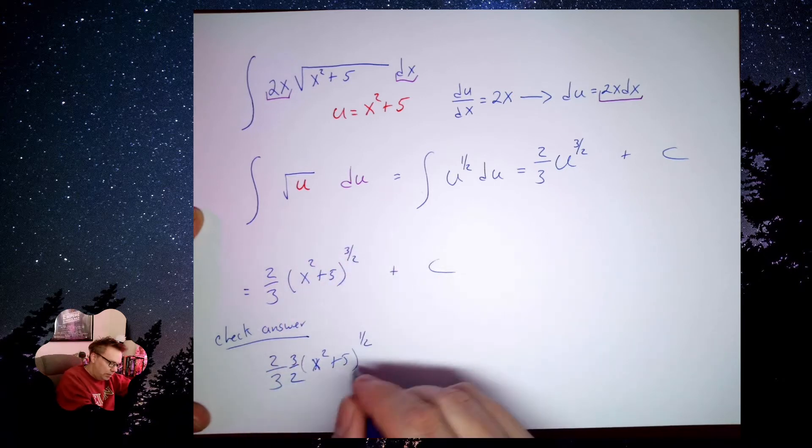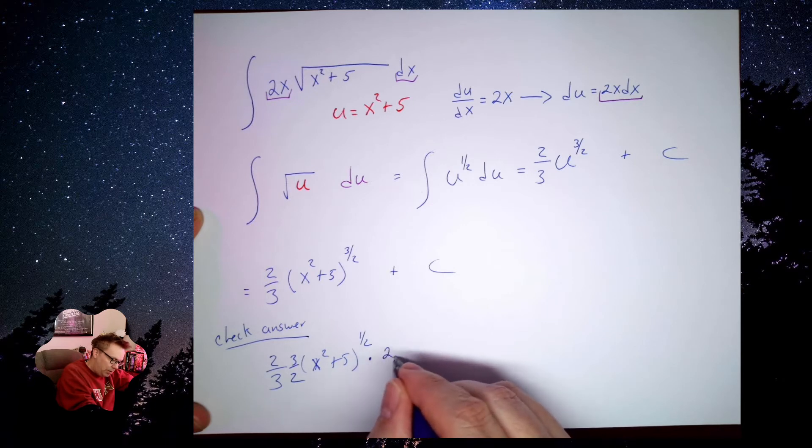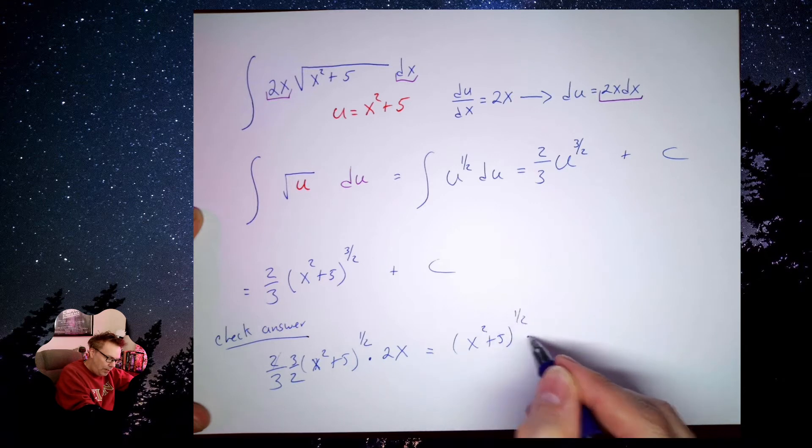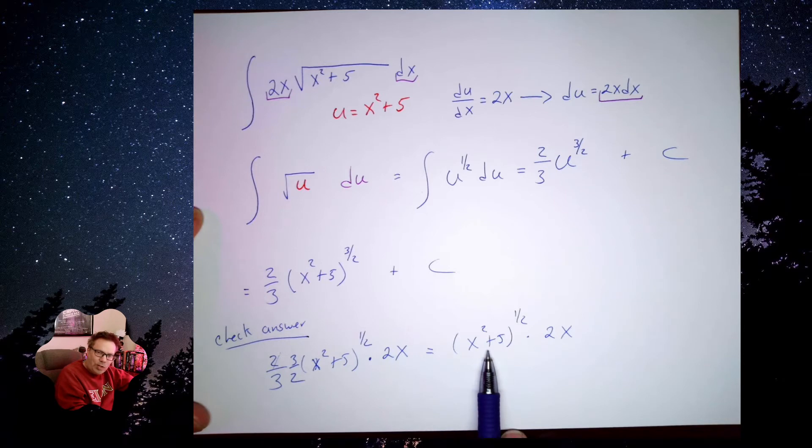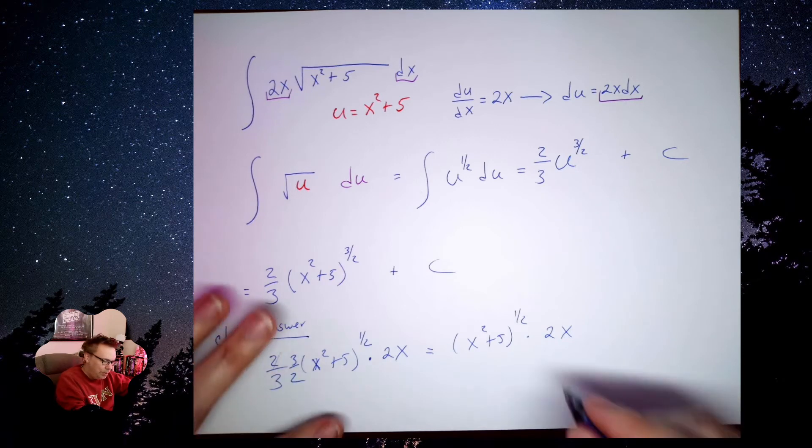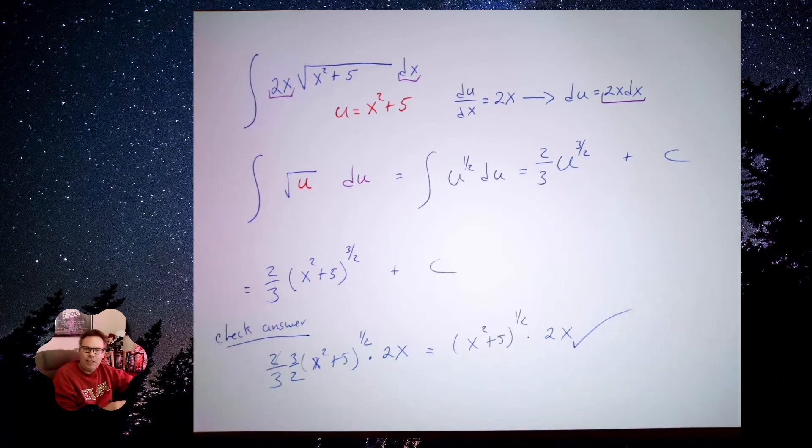But I was supposed to drop the power in the front, times the derivative of the inside. Simplifying, these just cancel out. So I'm left with x squared plus 5 to the 1 half times 2x. Well, this is the square root of x squared plus 5 times 2x. It's just written in a different order. So it checks out.